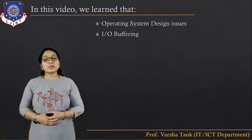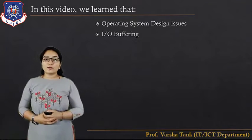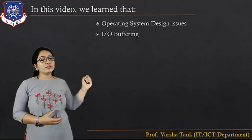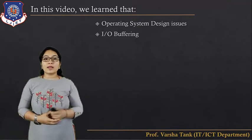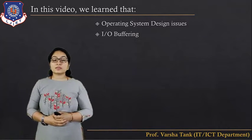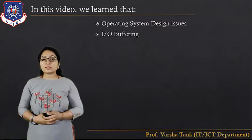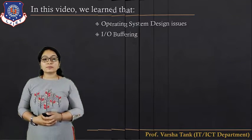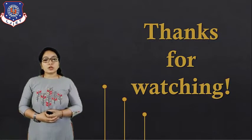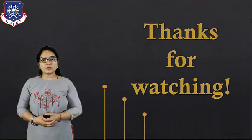In this video, we have learned about operating system design issues and IO buffering. In IO buffering, we covered the different types: no buffer, single buffer, double buffer, and circular buffer. In operating system design issues, we covered the two issues — generality and efficiency — and three different types of IO organizations. Thank you for watching.